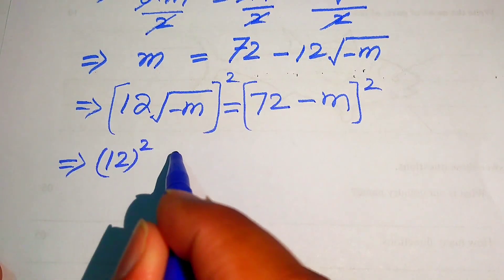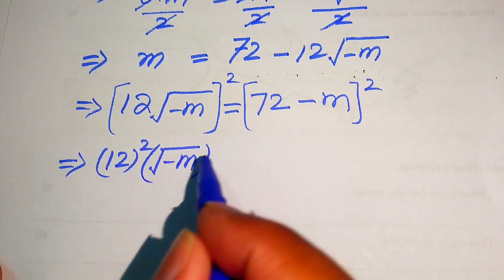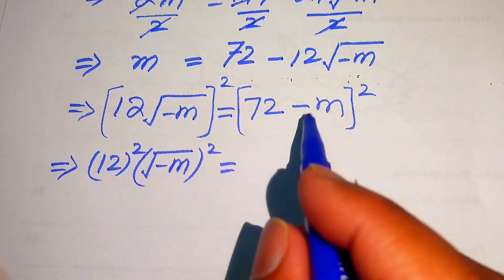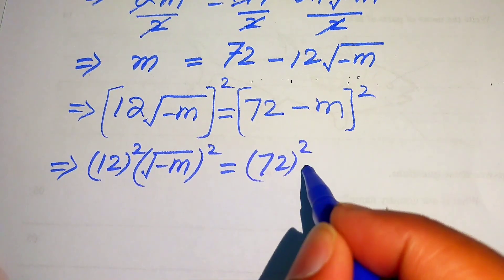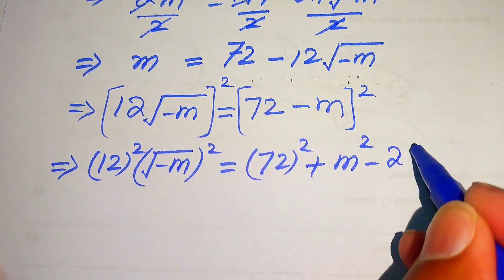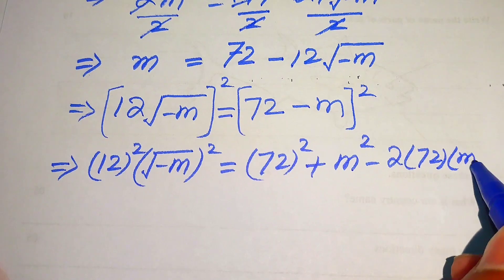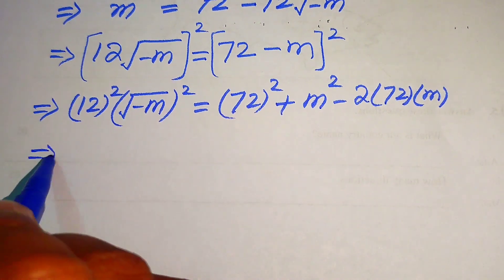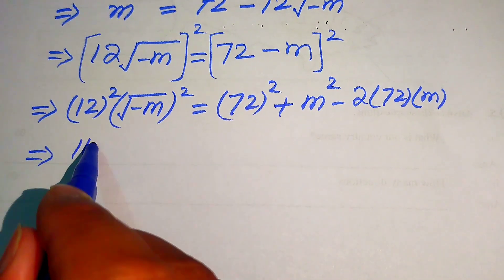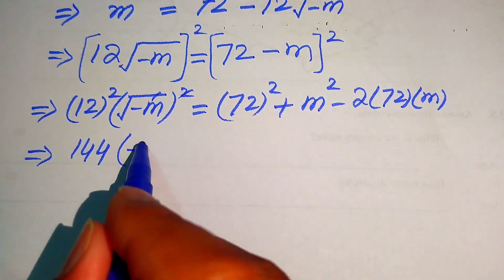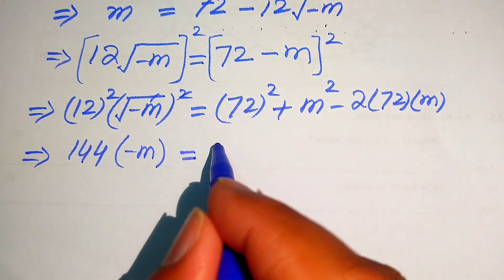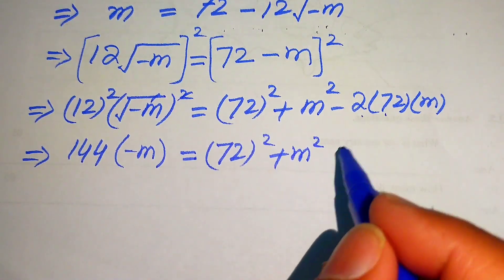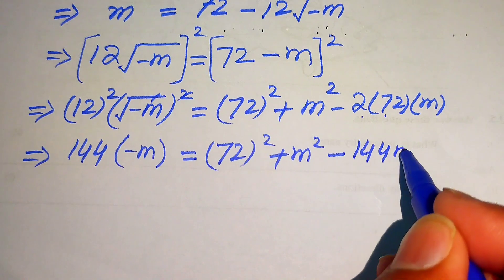Taking the square on both sides: 12 squared times square root of minus m whole squared equals to 72 minus m whole squared. We again use the formula above and expand the right side as 72 squared plus m squared minus 2 times 72 times m. On the left side, 12 squared is 144, and the square and square root cancel, giving 144 times minus m equals 72 squared plus m squared minus 144m.